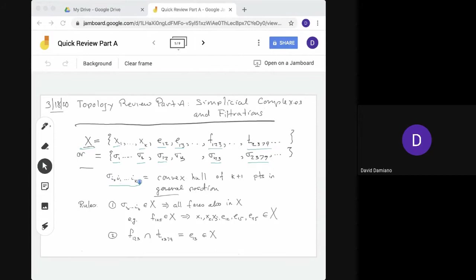Now that notation, if we have sigma I0 up to IK, that means that's the convex hull of K plus 1 points, the points are the X0 up to XK, and they are in general position. We had two rules for simplicial complex. The first says that if we have a simplex in the complex, then all of its faces are also included in X. For example, if we take the face F125, if that's in X, then we have to have the vertices X1, X2, X5 in X, as well as the edges E12, E15, and E25. Second rule says that if we intersect two of the simplices, so here there's a face F123, or tetrahedron T1379, their intersection E13 has to be in the complex as well.